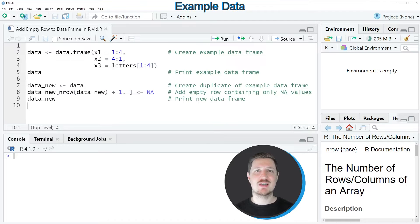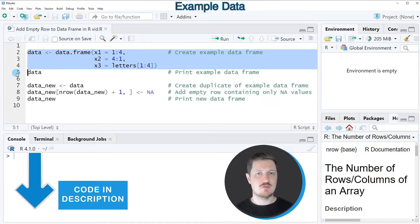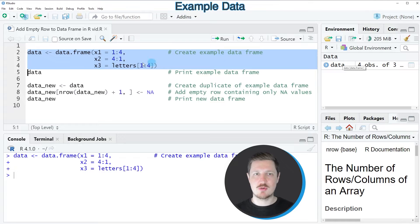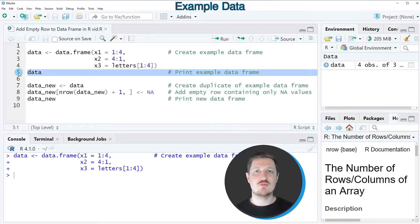In this video I will show you an example based on the data frame that we can create with lines 2 to 4 of the code. After running these lines, a new data set called data appears at the top right. We can print this data frame to the RStudio console by running line 5, and you can see we have created a data frame containing four rows and three columns: x1, x2, and x3.